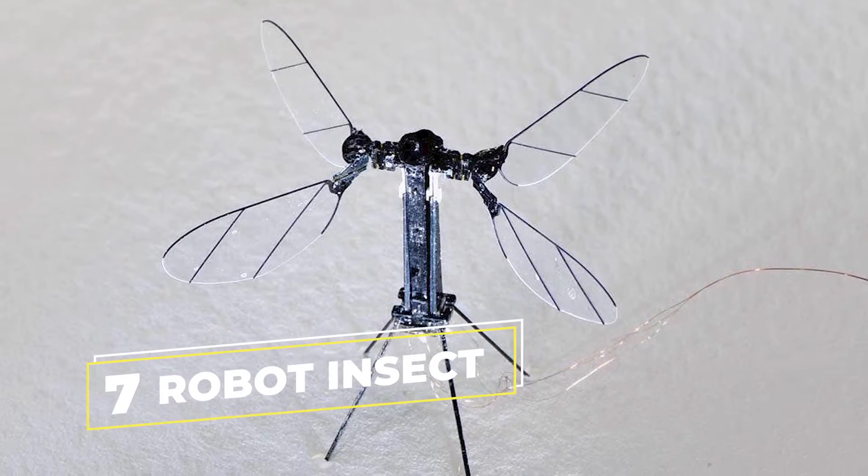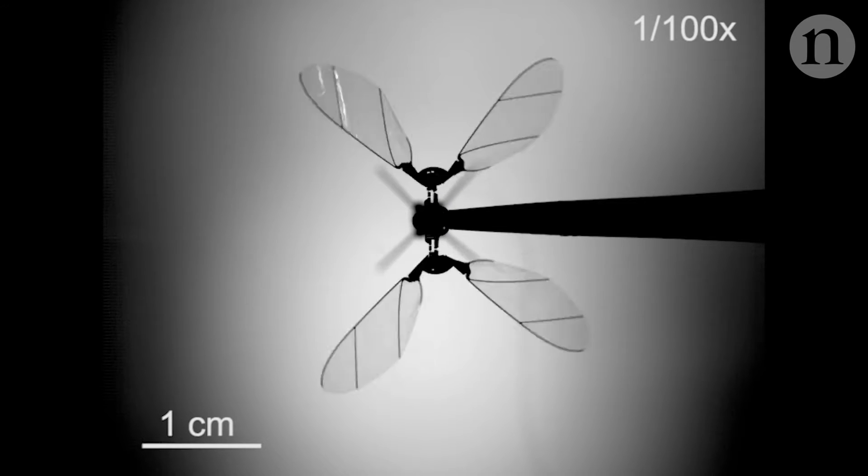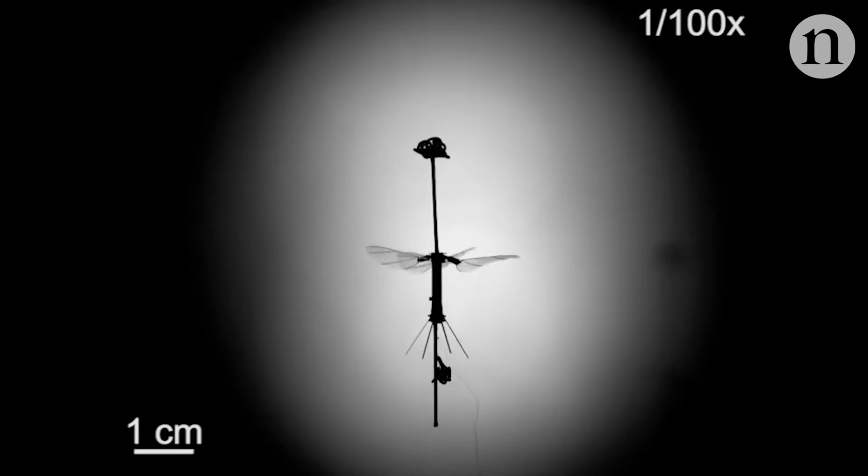At number 7, we have the Robot Insect. This one might be a threat to your privacy. Scientists today have invented something as advanced as a robot insect due to the discovery of nanoparticles. It can be used to perform surveillance, take photographs, penetrate, record sound, and so on and so forth, not to underestimate the infinite possibilities of this robot.